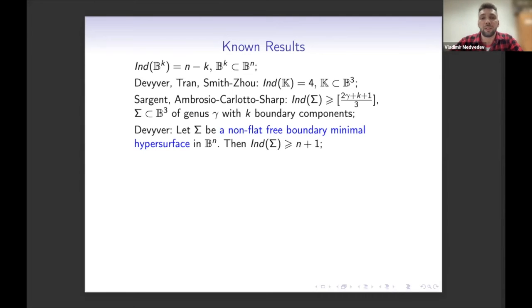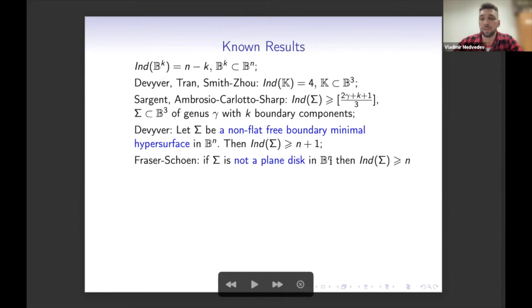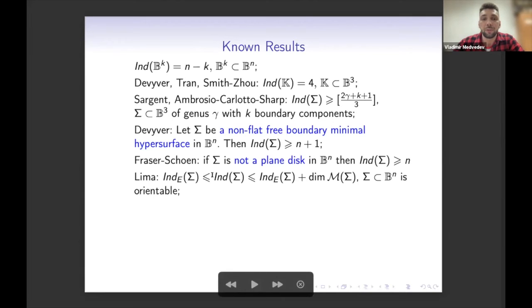Devyver proved that if sigma is a non-flat free boundary minimal hypersurface then its index is at least n+1, though this holds only for hypersurfaces. Fraser and Schoen proved that if sigma is not a planar disk — any two-dimensional free boundary minimal surface in B^n — then its index is at least n, the dimension of the ambient ball. A very interesting bound was proved recently by Lima: the index of sigma is bounded from below by the energy index, and from above by the energy index plus the dimension of the moduli space of conformal classes on sigma.